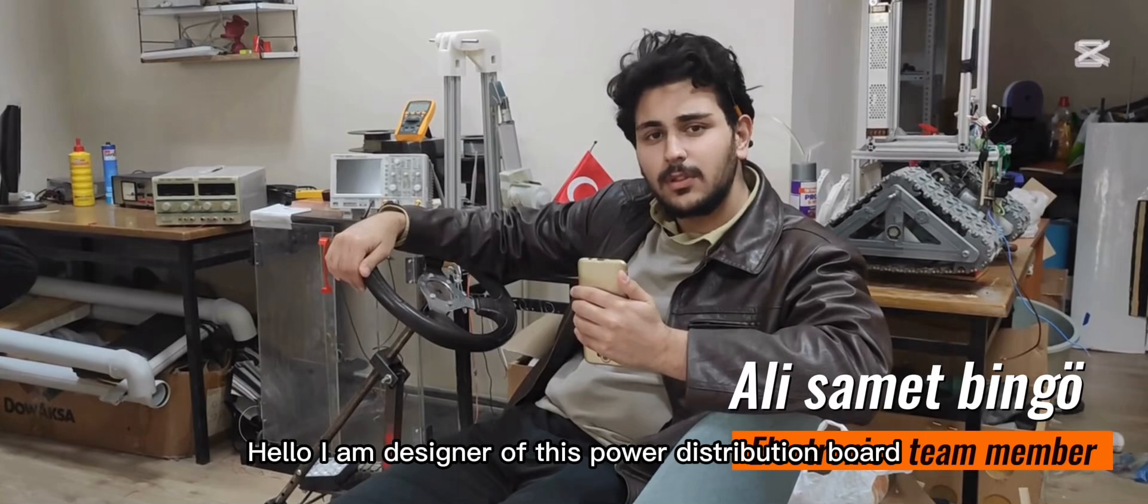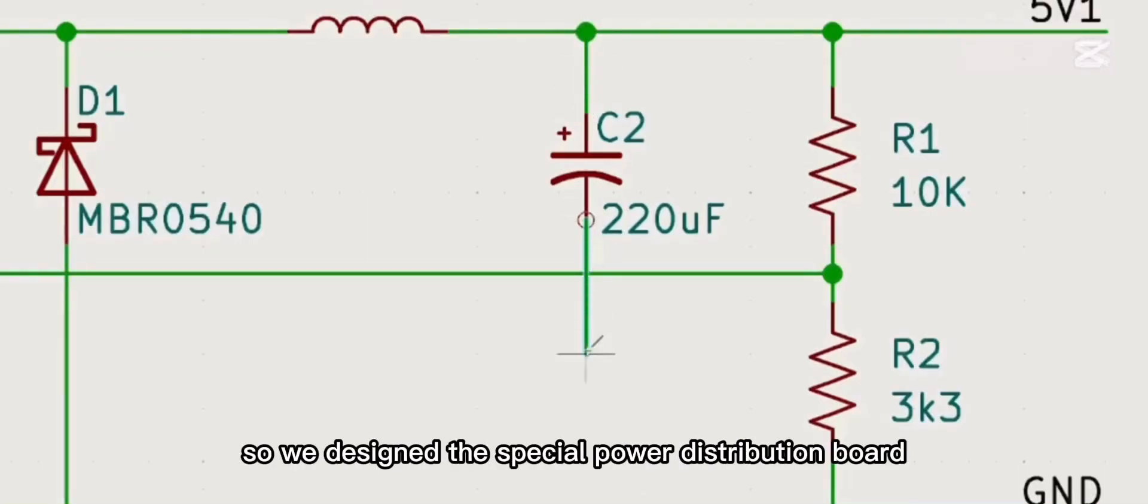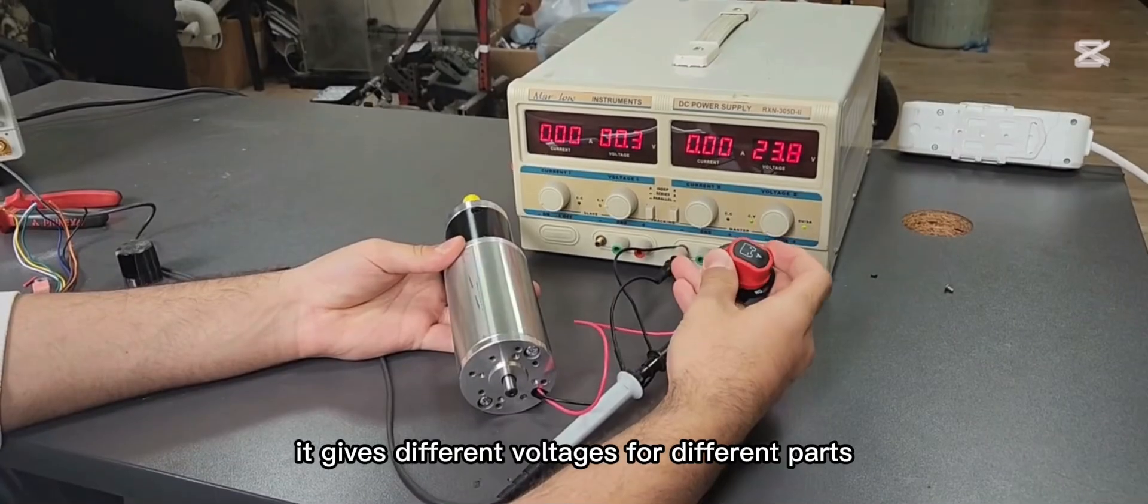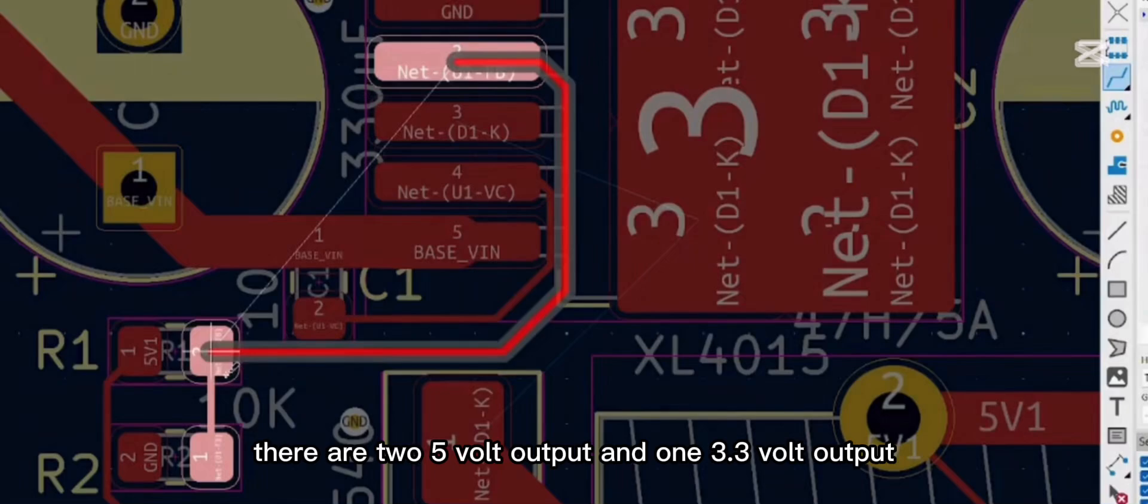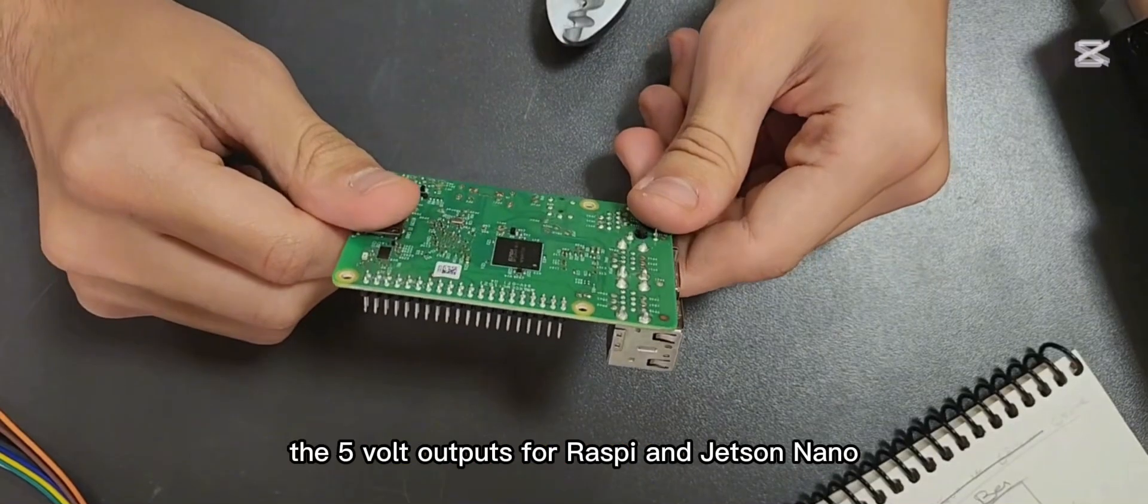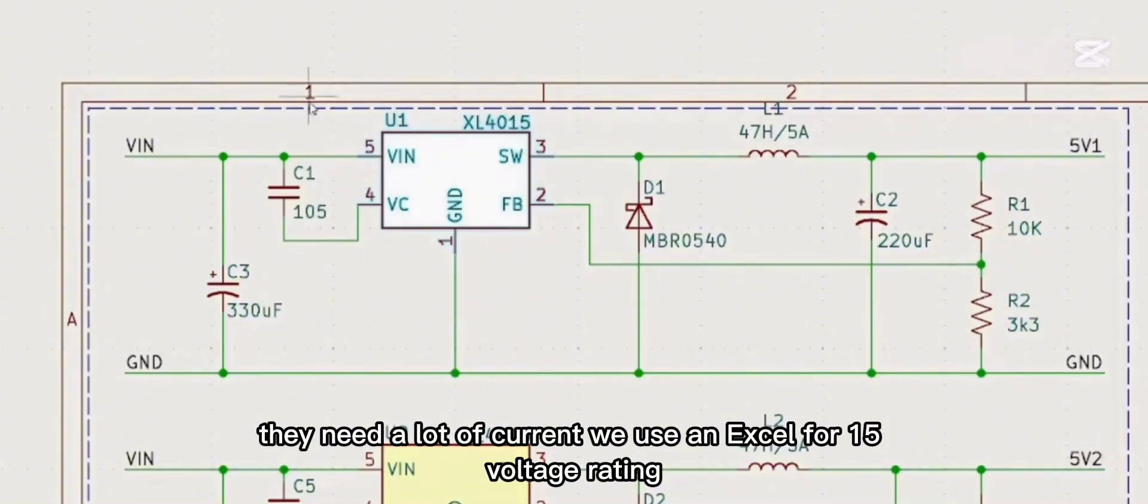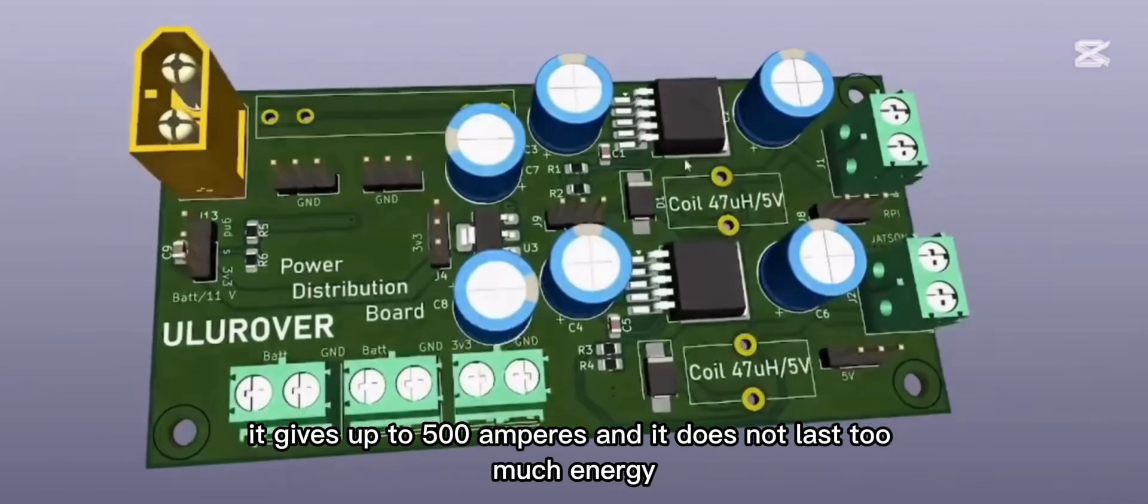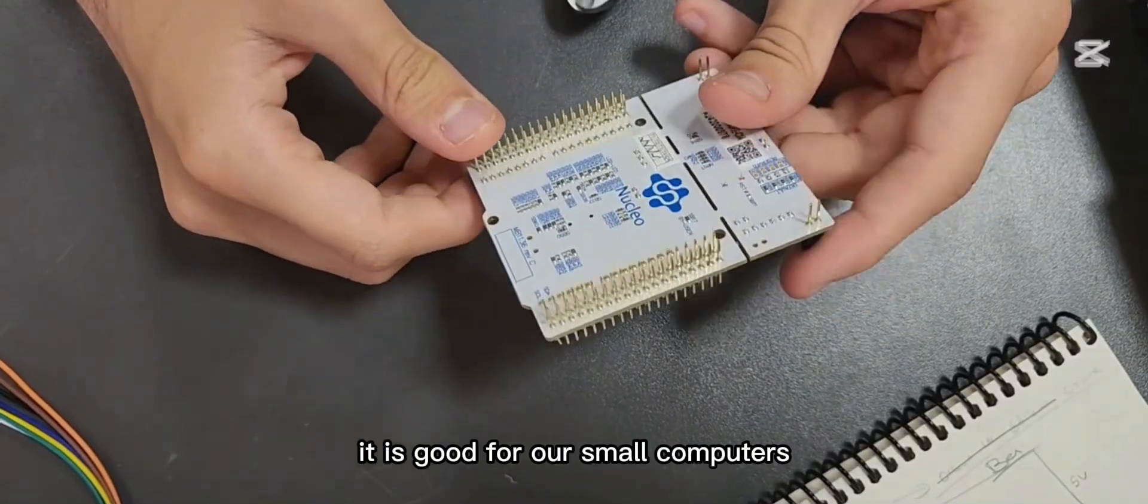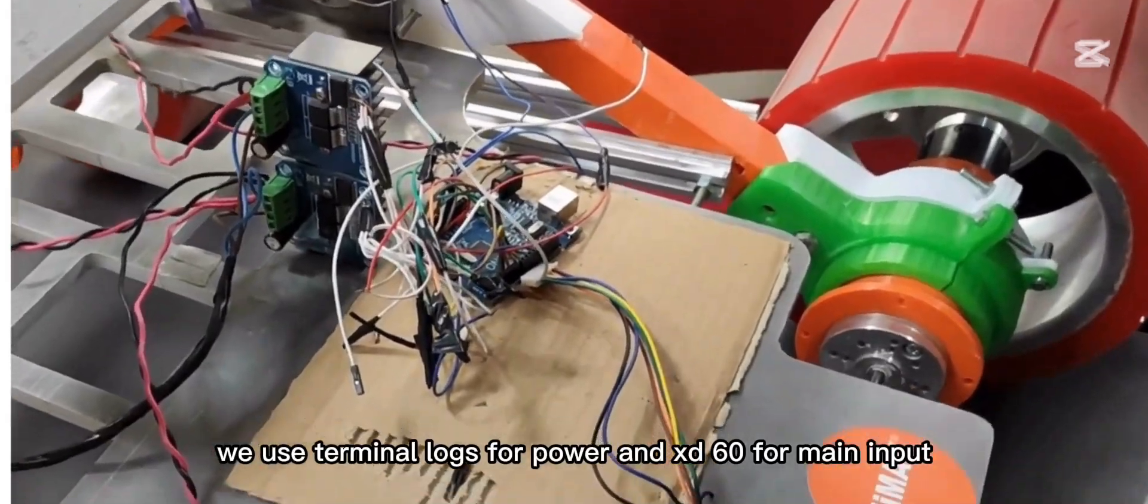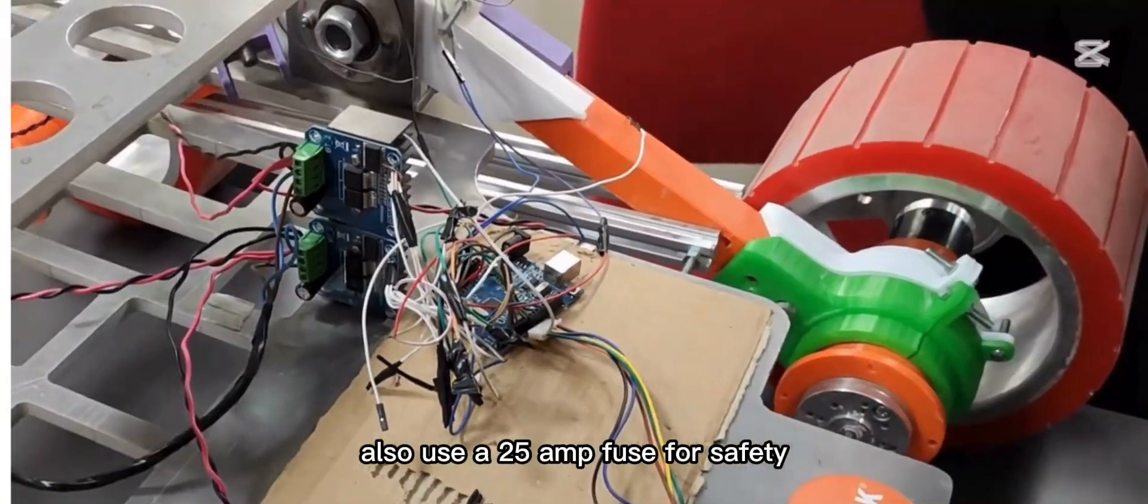Hello, I am designer of this power distribution board and I am gonna introduce it to you. Our rover needs a lot of power, so we designed a special power distribution board. It gives different voltage for different parts. There are two 5V outputs and one 3.3V output and two battery voltage outputs. The 5V outputs for Raspberry Pi and Jetson Nano. They need a lot of current. We use an XL4015 voltage regulator. It gives up to 5A current and it does not waste too much energy. This is good for our small computers. We use terminal blocks for power and XT60 for the main input. We also use a 25A fuse for safety to cut the power if something goes wrong.